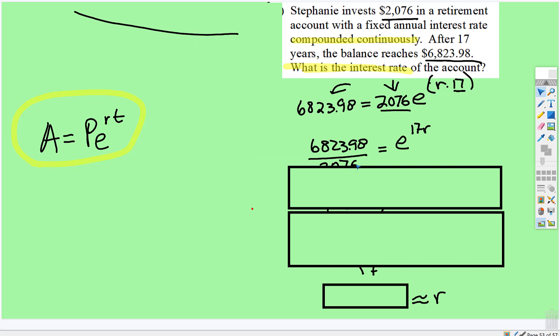17 times r is just 17r. And then this is where you're like, what do I do? Take the natural log of both sides.